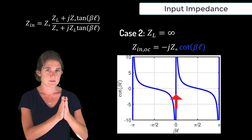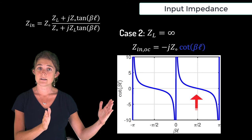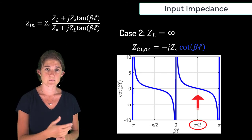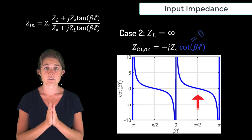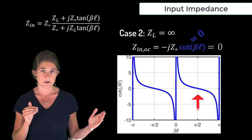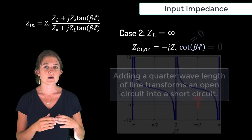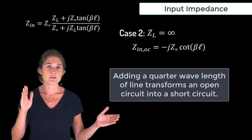However as the length of the transmission line increases the cotangent of beta L decreases until here where beta L is pi over 2 which corresponds to L equal to a quarter wavelength. Here the cotangent of beta L is zero so the input impedance is zero which looks like a short circuit. So in this case adding a quarter wavelength of line transformed an open circuit into a short circuit.